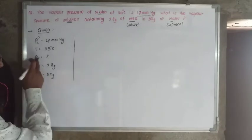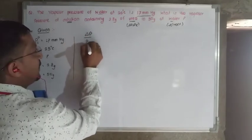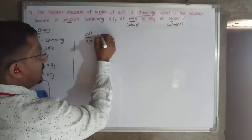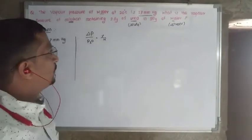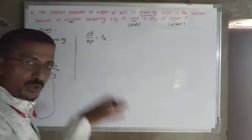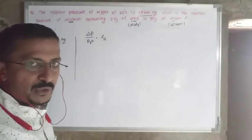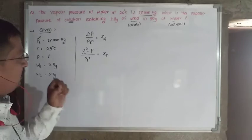To determine the vapor pressure of the solution, use the formula: delta P divided by P1 naught equals the mole fraction of solute, x2. Elaborating, delta P is the lowering of vapor pressure — the difference between the vapor pressure of the pure solvent and the solution. So instead of delta P, write P1 naught minus P divided by P1 naught equals x2.